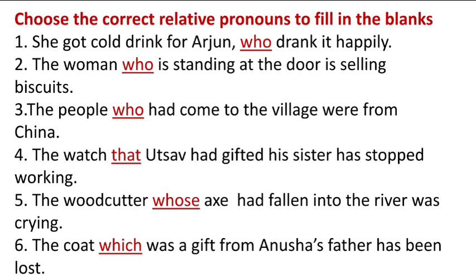The watch that Utsav had gifted his sister has stopped working. The woodcutter whose eggs had fallen into the river was crying. The coat, which was a gift from Anusha's father, has been lost.